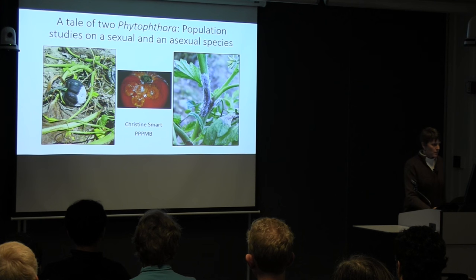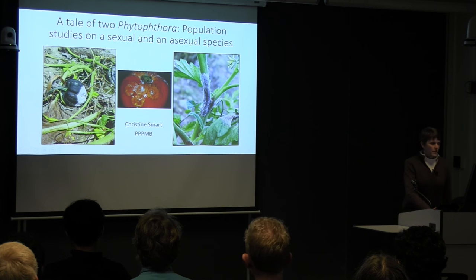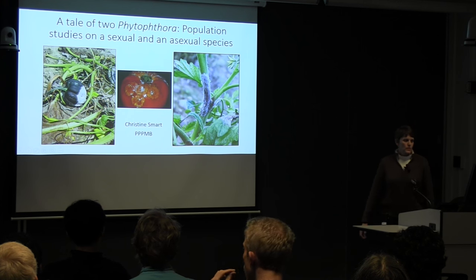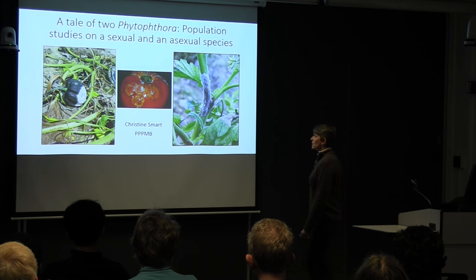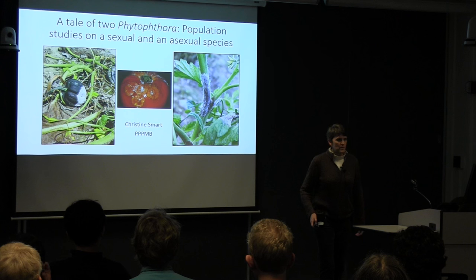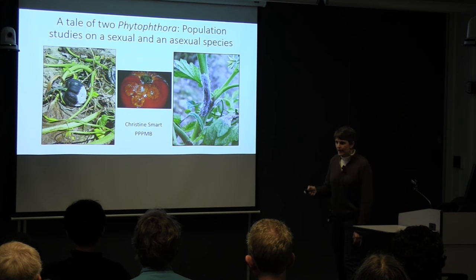The symptoms on the title slide are symptoms of the two pathosystems. On the left-hand side is Phytophthora blight caused by Phytophthora capsici, and in the center and on the right-hand side you see Phytophthora infestans, which causes late blight of potato and tomato — infamous for being the pathogen involved in the Irish potato famine.